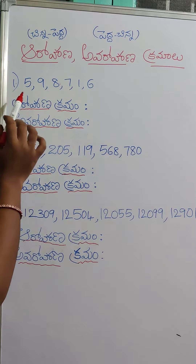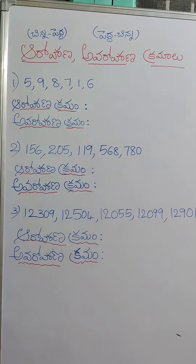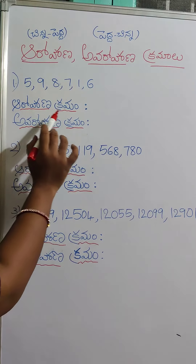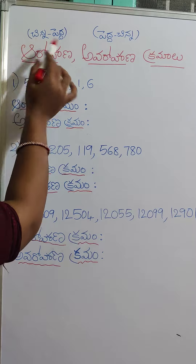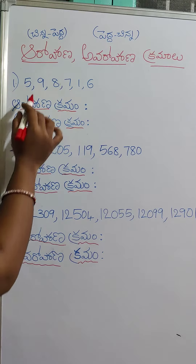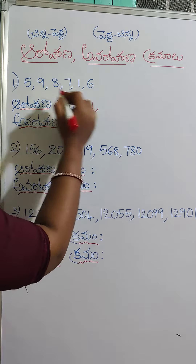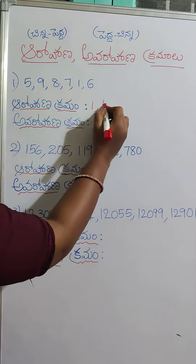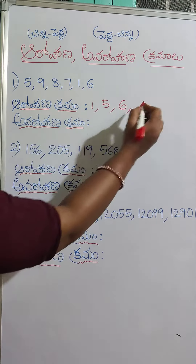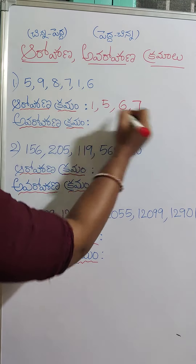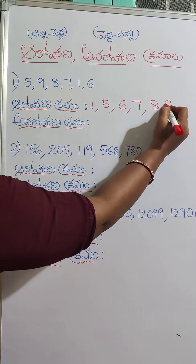First click. Arohana Kramam: 5, 9, 8, 7, 1, 6. Next: 1, next 5, next 6, next 7, next 8, next 9.